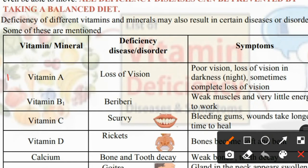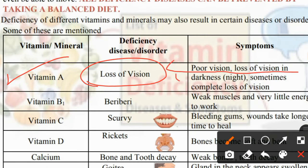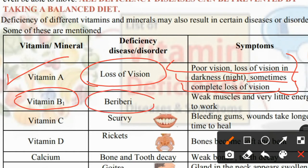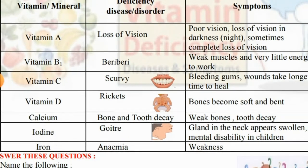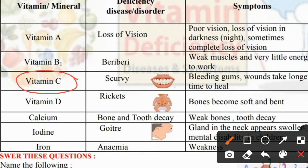First is Vitamin A — the disease is loss of vision. Symptoms: poor vision, loss of vision in darkness, night blindness, and sometimes complete loss of vision. Then Vitamin B1 — the disease is beri-beri: very weak muscles and very little energy to work.